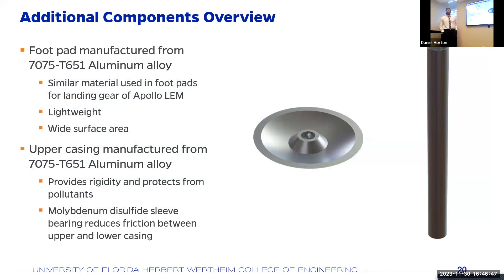Additional components beyond the spring and damper core include the upper casing and the foot pad. The foot pad is manufactured from 7075-T621 aluminum alloy — it has been used in previous missions, it is cheaper than titanium, and its strength requirements are satisfied by aluminum. The foot pad is designed with a wide surface area so that, combined with the ball and socket joint, the HLS remains stable upon landing on uneven surfaces. The upper casing is also manufactured from the same aluminum alloy, providing rigidity, ensuring linear spring motion, and protecting the spring from pollutants. Molybdenum disulfide lubricant is also used to reduce friction between the lower strut translating into the upper casing.